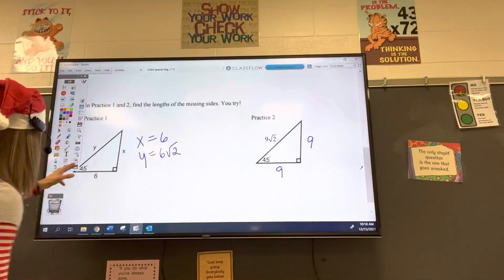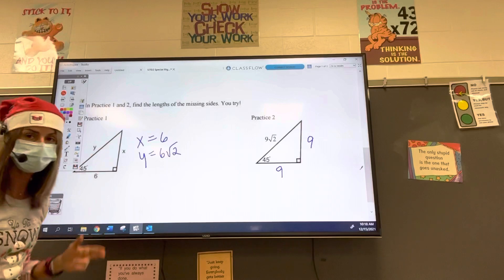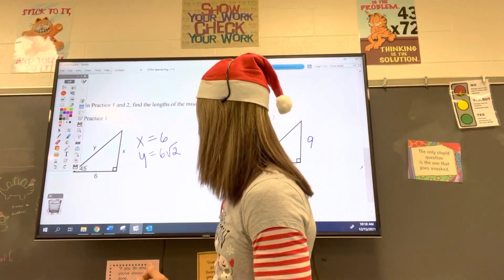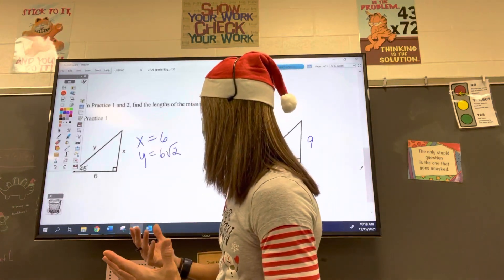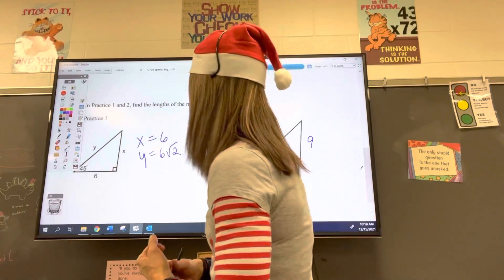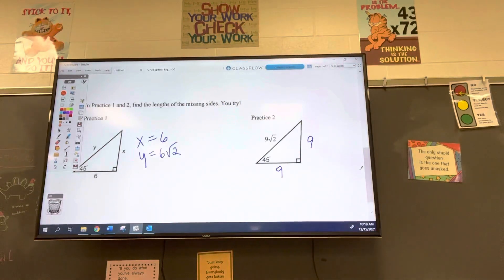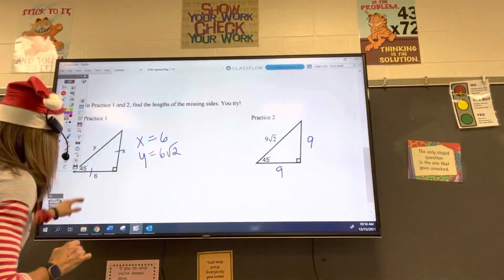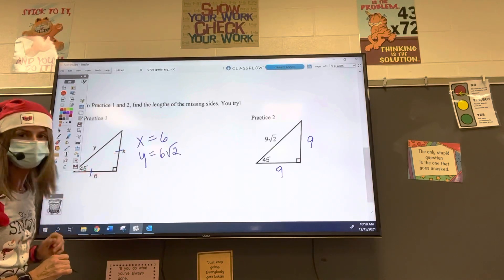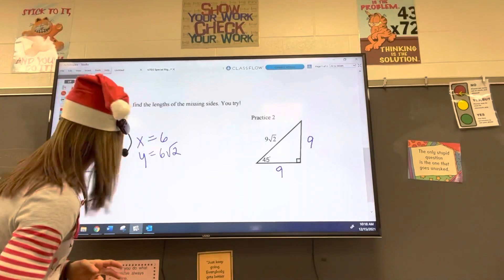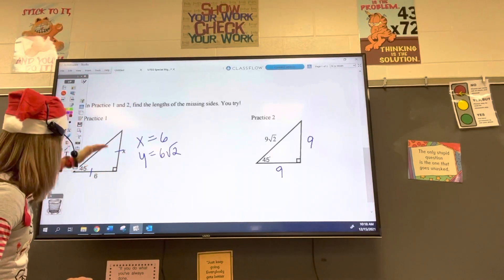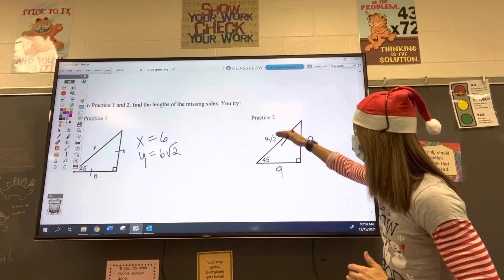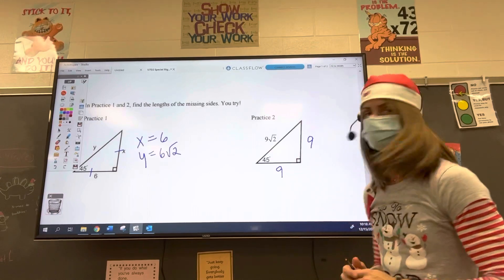So again, 45 degrees, 90 degrees, this missing angle has to be 45 because 45 plus 45 plus 90 adds up to 180. We know the sum of all the angles and the interior angles in any triangle is always 180. So we know the lengths of these two legs are the same because it's a 45, 45, 90 triangle. So if this leg is 6, x is equal to 6, so you get the value for x. To get the value for y, it's the hypotenuse. So it's just 6 times the square root of 2. This one, we're given the hypotenuse, so we're dividing by the square root of 2 to get the lengths of the legs of the same.